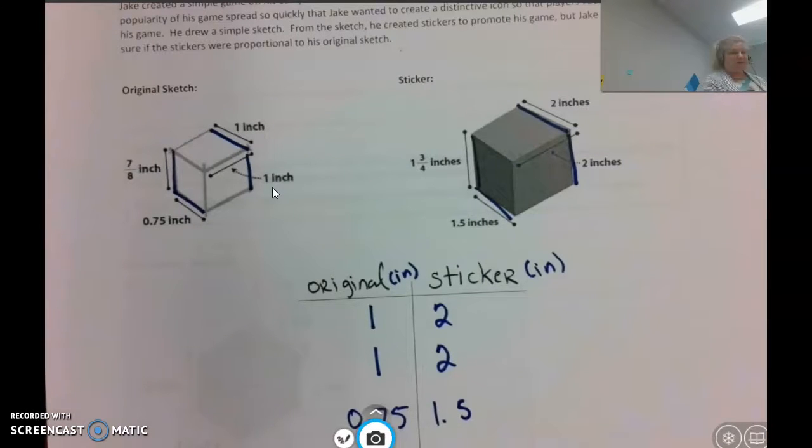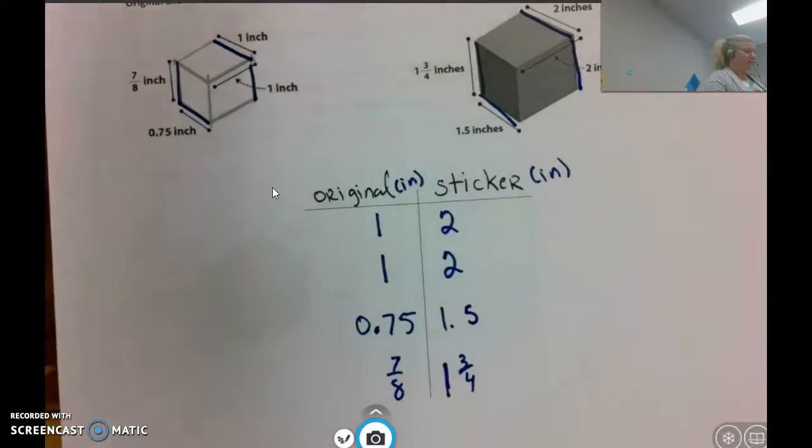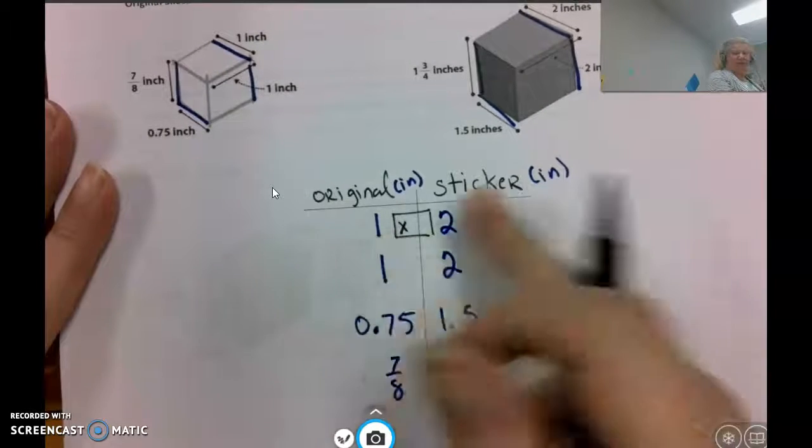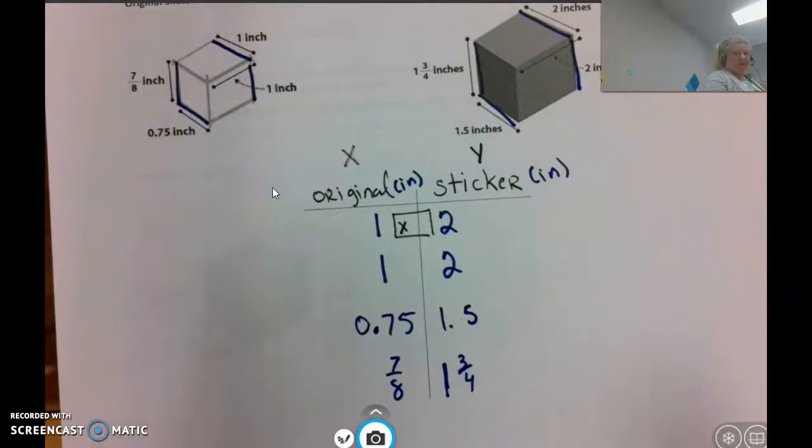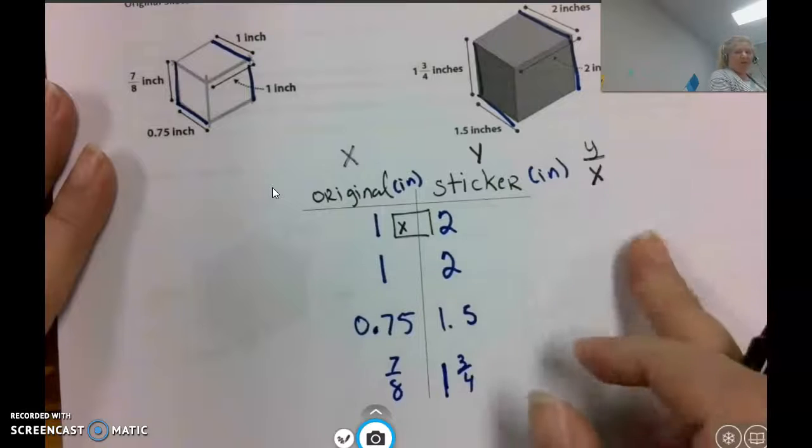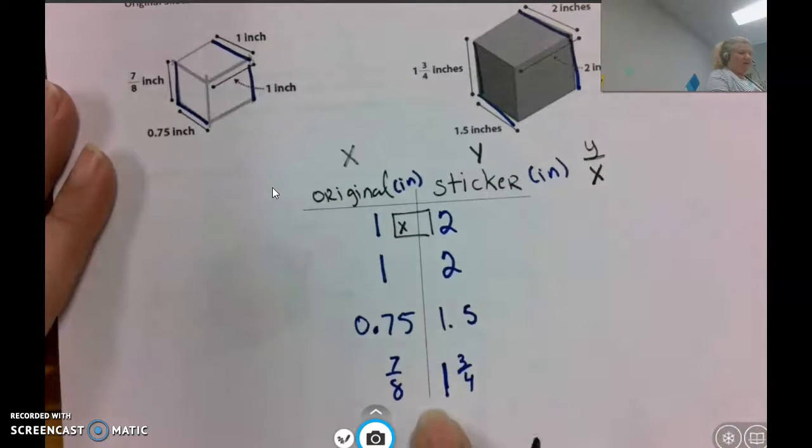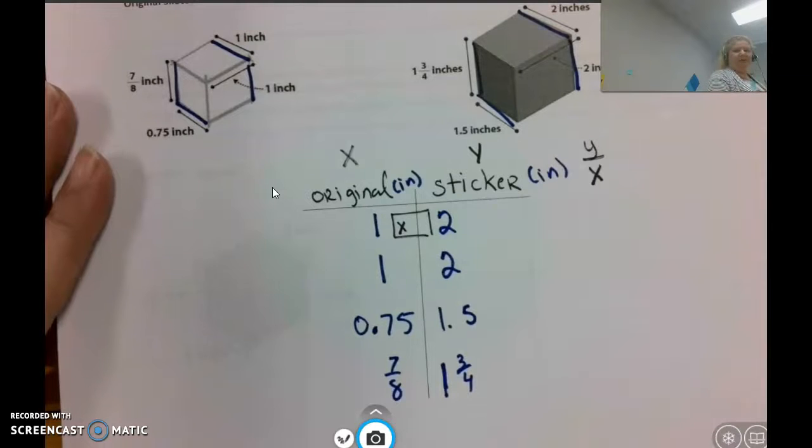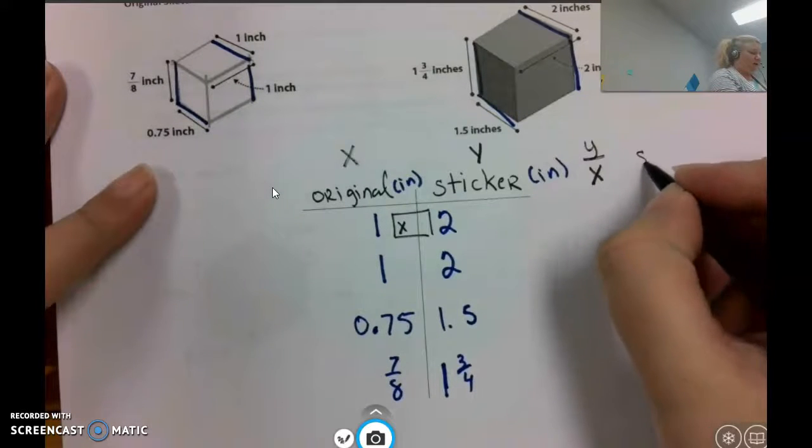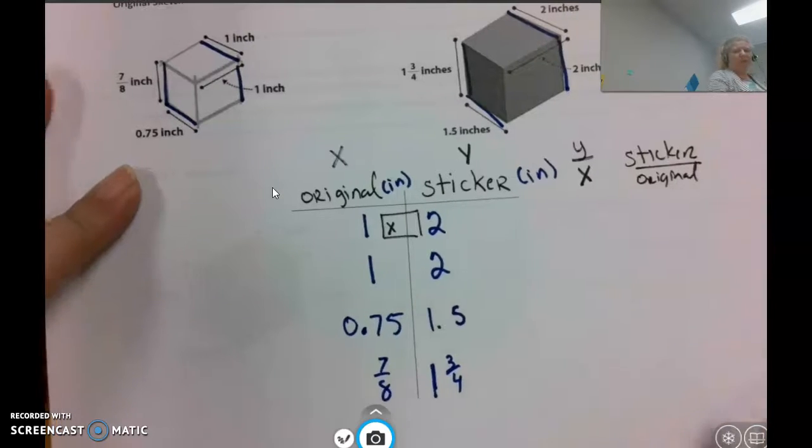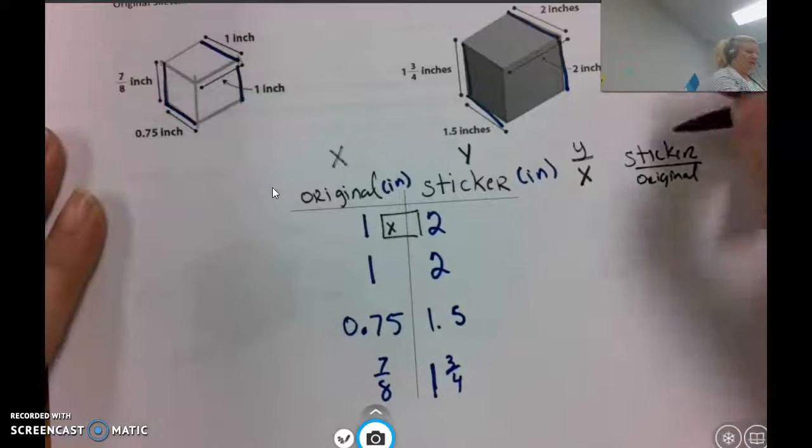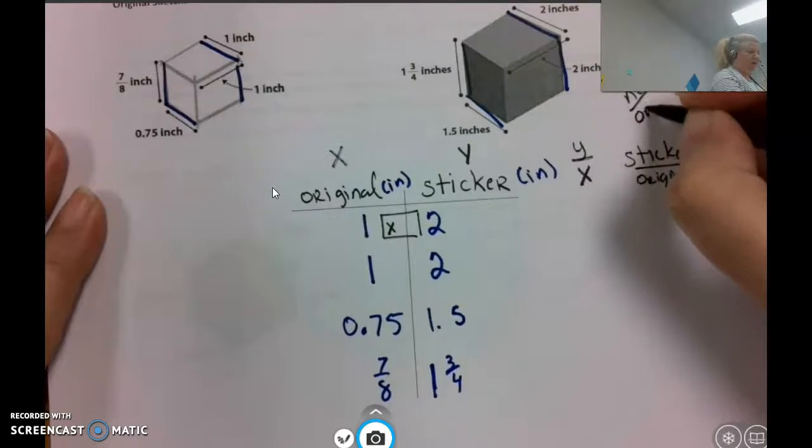As we've been doing for quite some time now, in order to determine if this is proportional, we need to see what's happening here. What is the structure? What is the factor that we are multiplying each of these x terms by to get the y? The way we do that is through division. We're dividing y divided by x to determine what the scale factor is. And then we're going to see if that's constant, which will tell us if it's proportional or not.